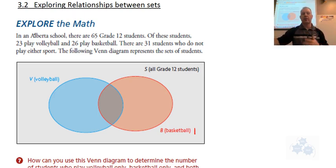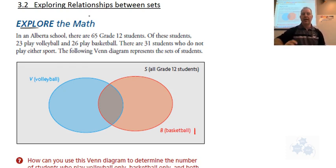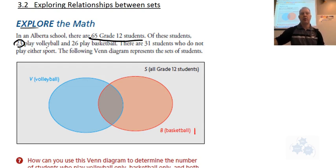Let's go through this question here. 3.2, explore the math, page 159. In an Alberta school, there are 65 grade 12 students. Of these students, 23 play volleyball, 26 play basketball, and there are 31 students who do not play either sport.